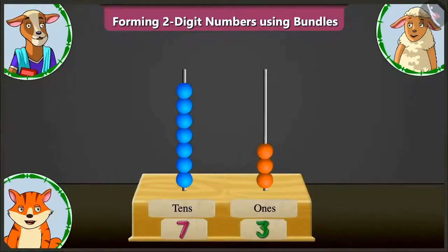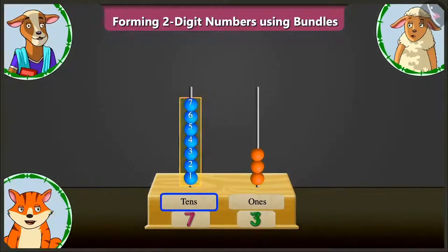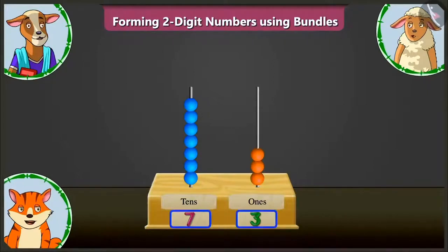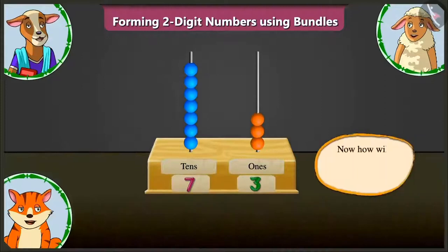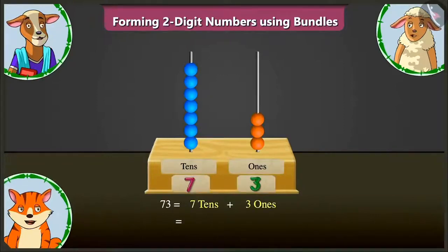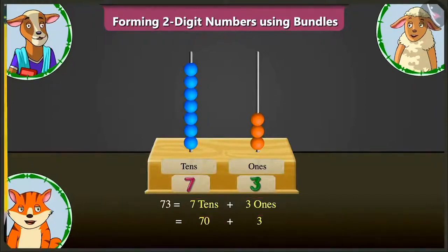Well done. Now here, in the tens box, seven tens means seventy, and in the ones box, three ones means three. So adding seventy and three makes it number seventy-three. Absolutely correct. Now, how will you expand seventy-three into two parts? Seventy-three means seven tens and three ones — meaning each two parts will be seventy and three. Well done.